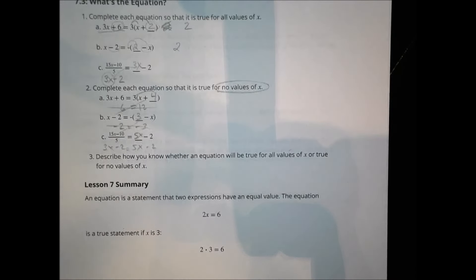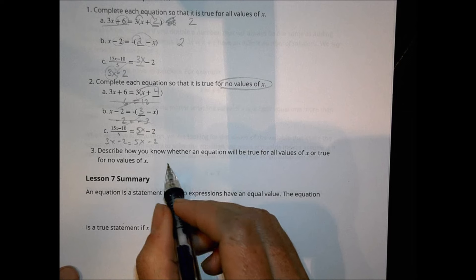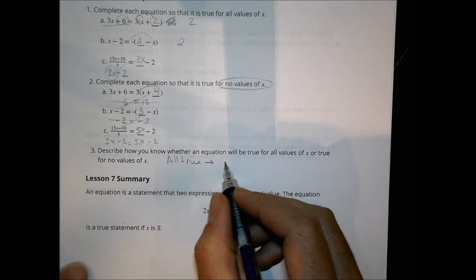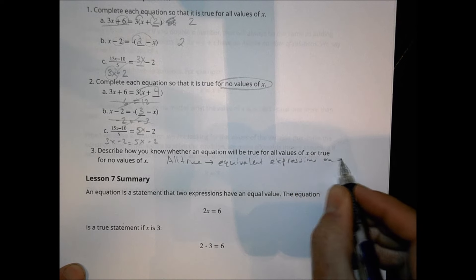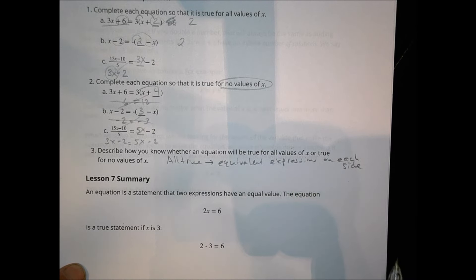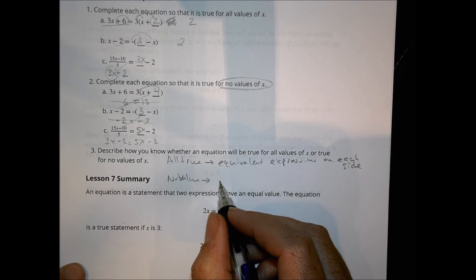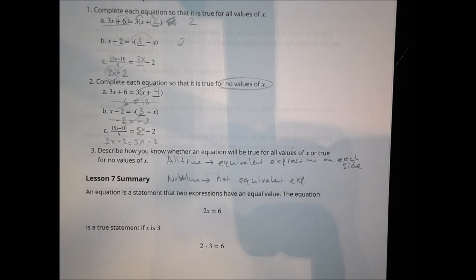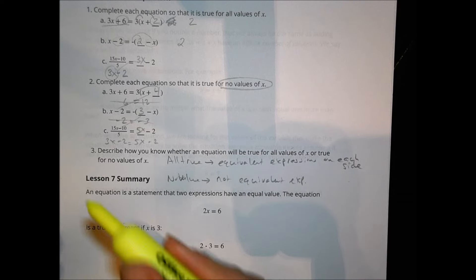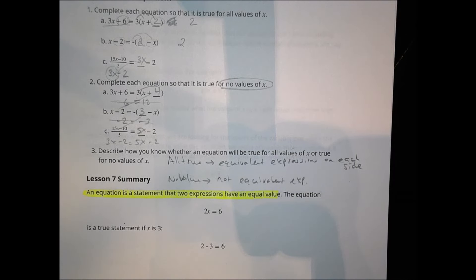Describe how you know whether an equation will be true for all values of x or true for no values of x. If it's true for all values, then we're going to have equivalent expressions on each side. If it's true for no values, then the expressions will not be equivalent. In summary, an equation is a statement that expresses that two expressions have an equal value.